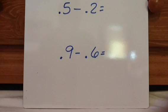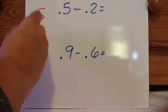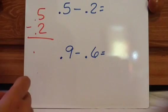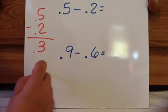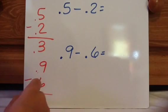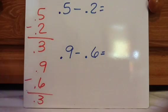The rules for subtraction are exactly the same. You line up the decimals. So if I have 0.5 and I'm doing minus 0.2, line them up. Put your decimal right there. You have 0.3 as your answer. If I have 0.9 minus 0.6, I have 0.3 as my answer.